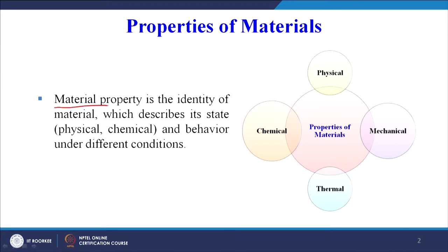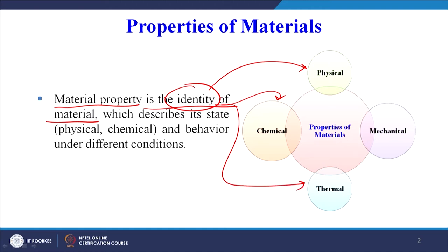A material property is the identity of the material — it will identify the material based on its physical, chemical, thermal, and mechanical properties. The material property describes its physical and chemical state and the behaviour under different conditions. So the property basically defines the behaviour of a material under different conditions — how it is going to behave when it is subjected to different types of conditions.